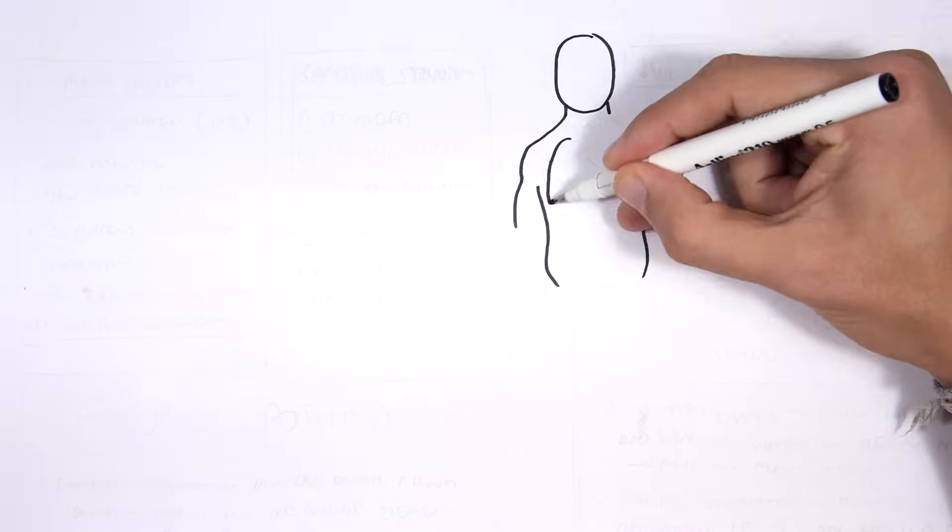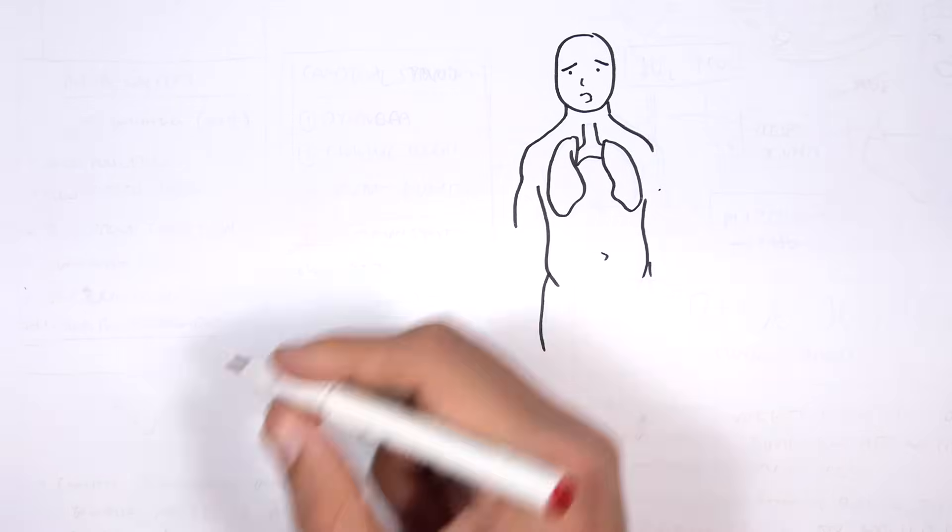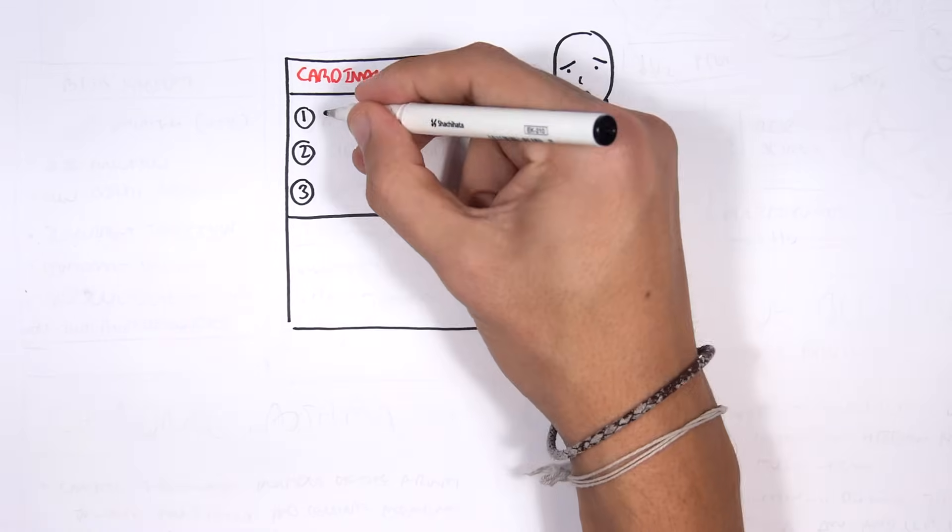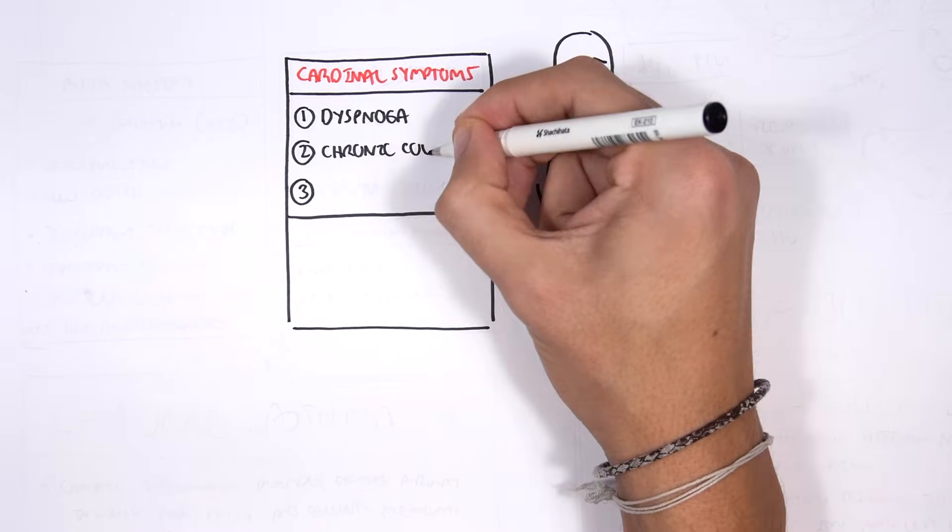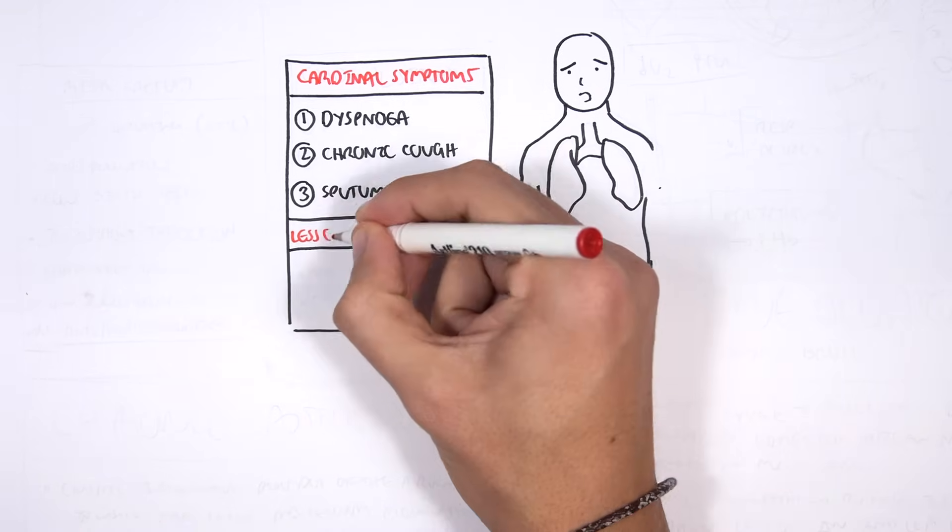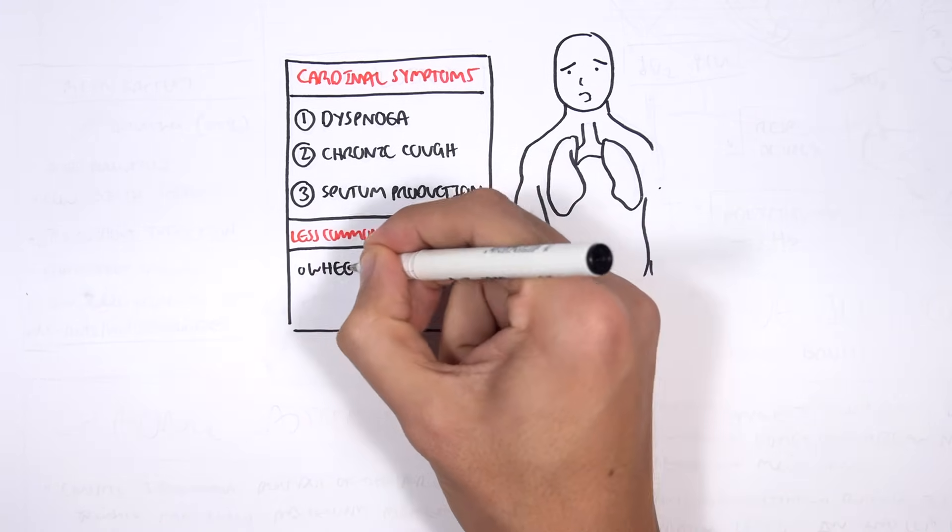Let's look at the signs and symptoms of COPD. Patients with COPD present usually with three cardinal symptoms: dyspnea, chronic cough, and sputum production. Less common symptoms include wheezing and chest tightness.